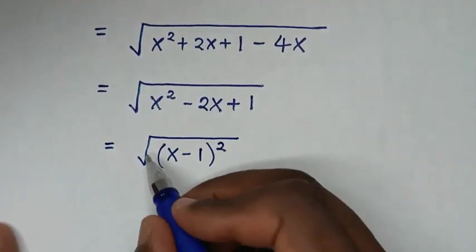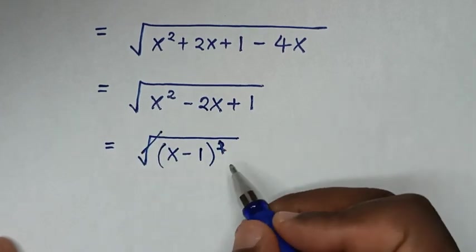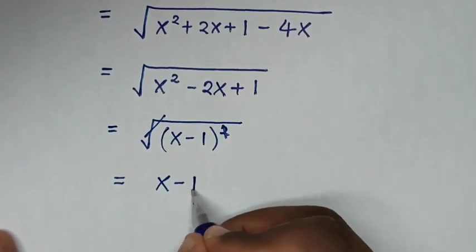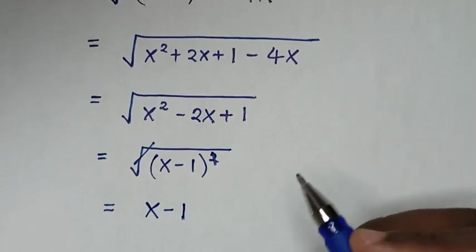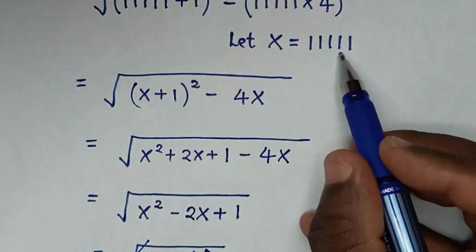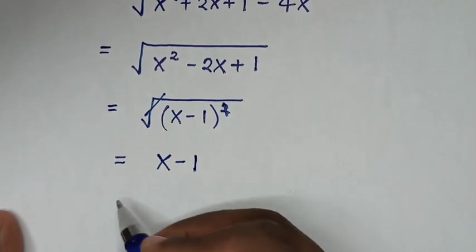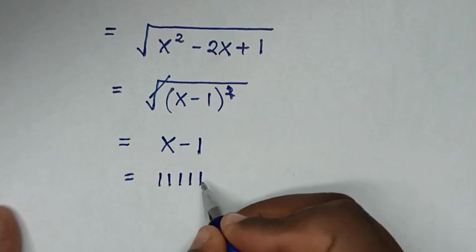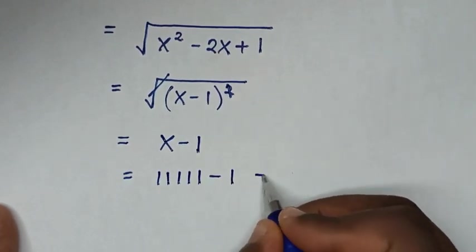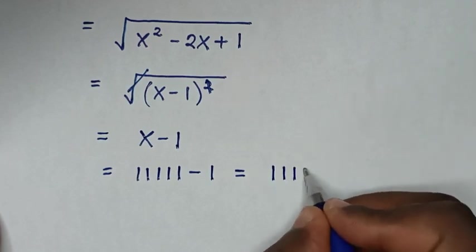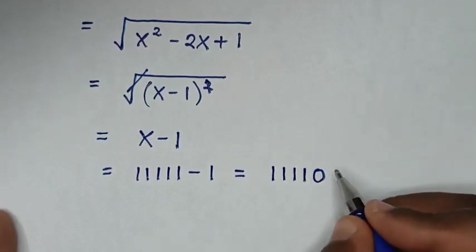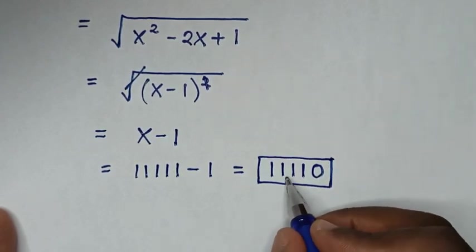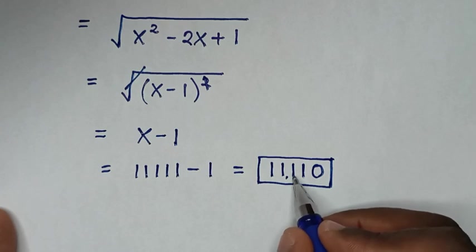Then in the next step, the square root will cancel with the square, so it will be equal to x minus 1. But we recall before we let x equal 11111, so it will be 11111 minus 1, which equals 11110. So this is our final answer, which is 11,110.